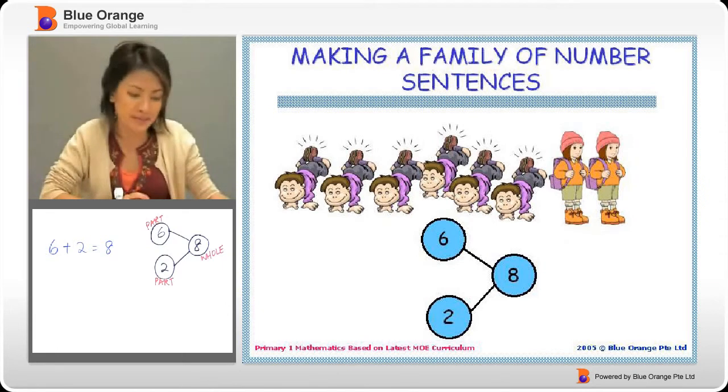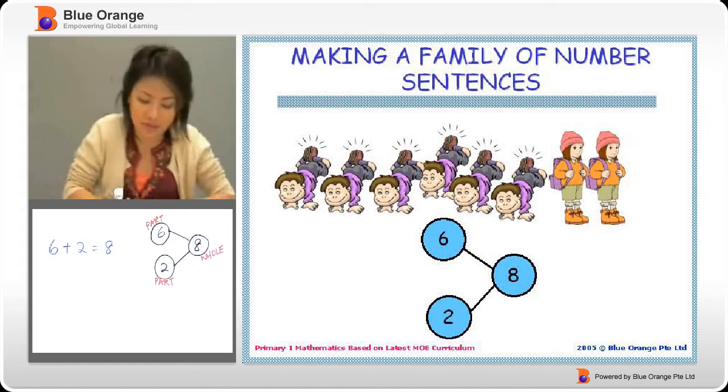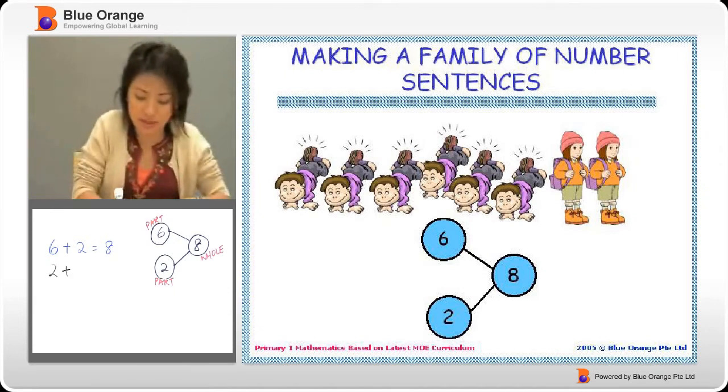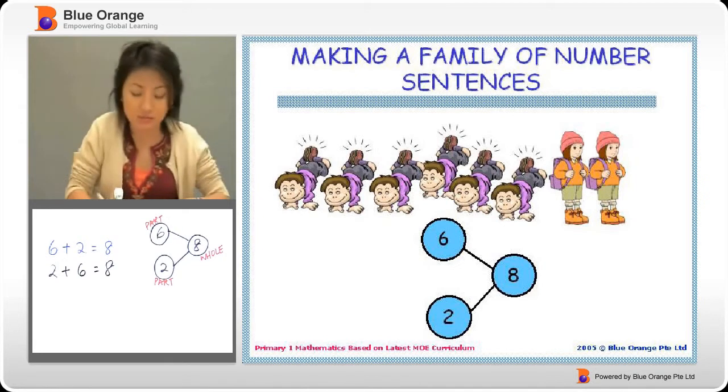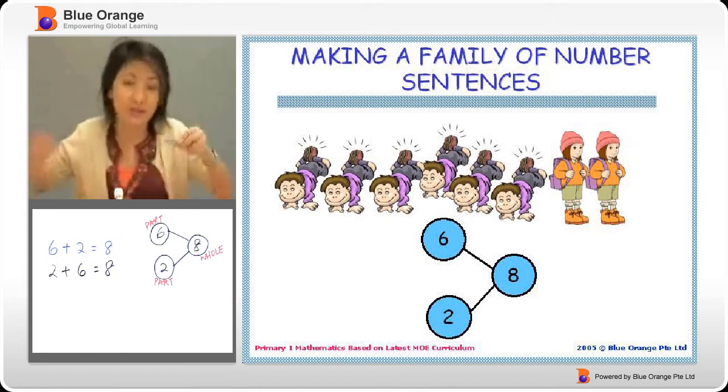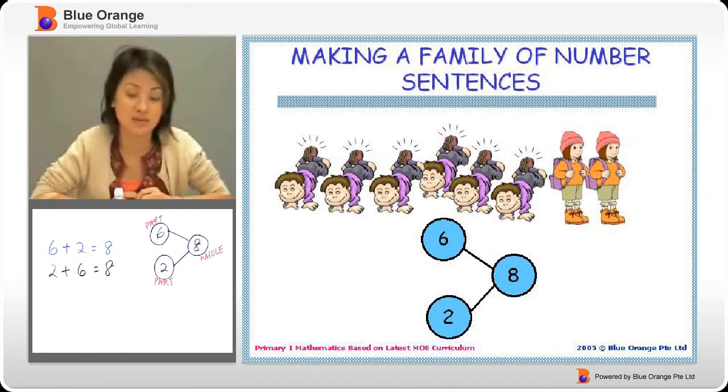Then we can also say, how about if I switch it around? It doesn't matter, right? So I can say two plus six will still give me eight. Two plus six gives me eight because both are parts. Part and part equals to whole.